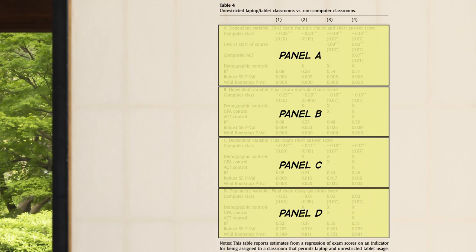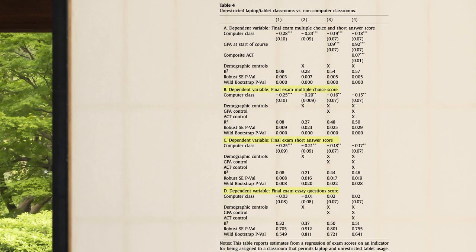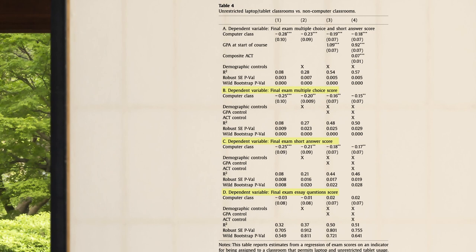You'll also notice a lot of other information on this table. Remaining panels in the table report effects of electronics use on components of the final exam, such as the multiple-choice questions. These results are mostly consistent with computer use effects on overall scores.